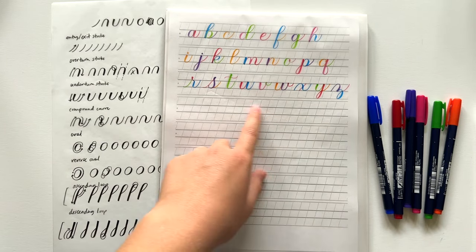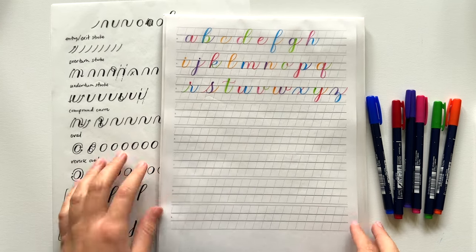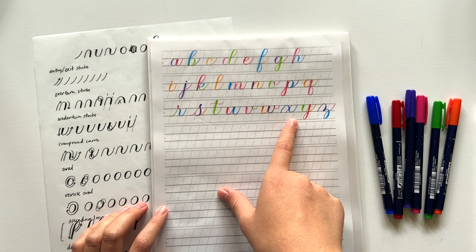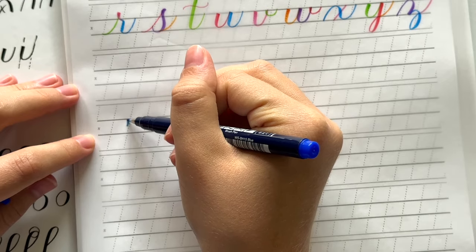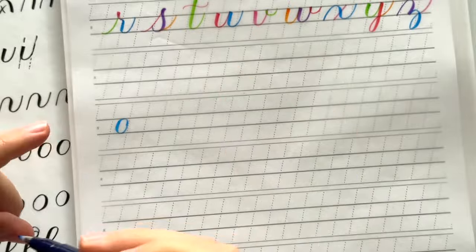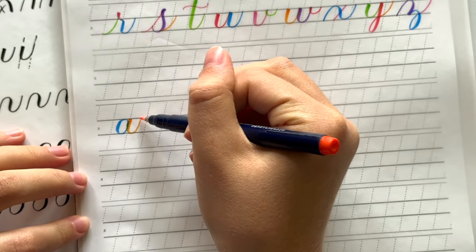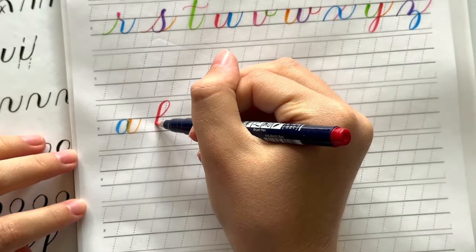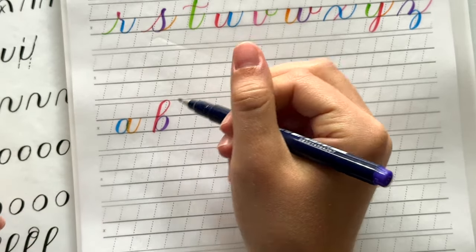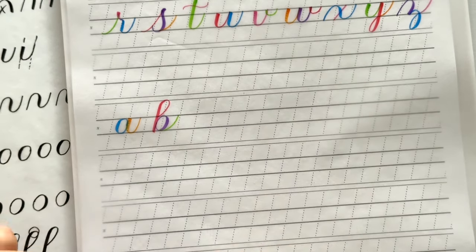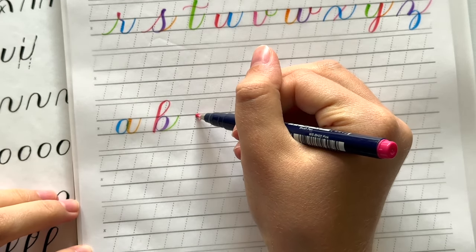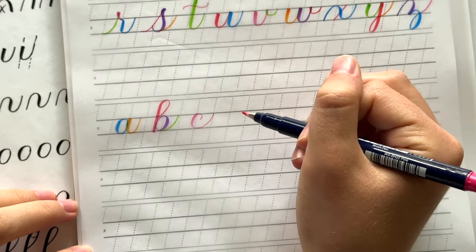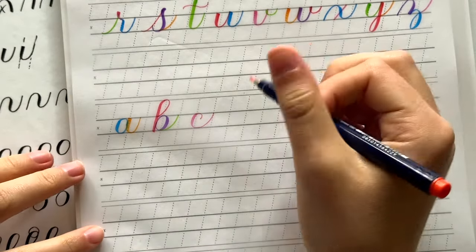All of the lowercase letters in the calligraphy alphabet can be broken down into individual strokes and they're mostly based off of these same eight basic strokes along with some variations or combinations. To write the letter a we'll do an oval and then we'll add an underturn stroke alongside it and there we have a lowercase letter a. For the letter b we'll do an ascending loop then a reverse oval and then an exit stroke. The letter c is a combination of the oval shape and then an exit stroke and we do that all in one stroke. So that's an example of how some of these letters are also combinations of the basic strokes.